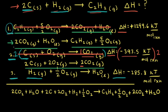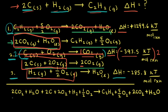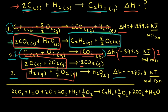Next, we add up all of our reactants and products. For the reactants we have: two CO₂, plus H₂O, plus two C, plus two O₂, plus H₂, plus one-half O₂. And for the products, we have: C₂H₂, plus five O₂, plus two CO₂, plus H₂O.